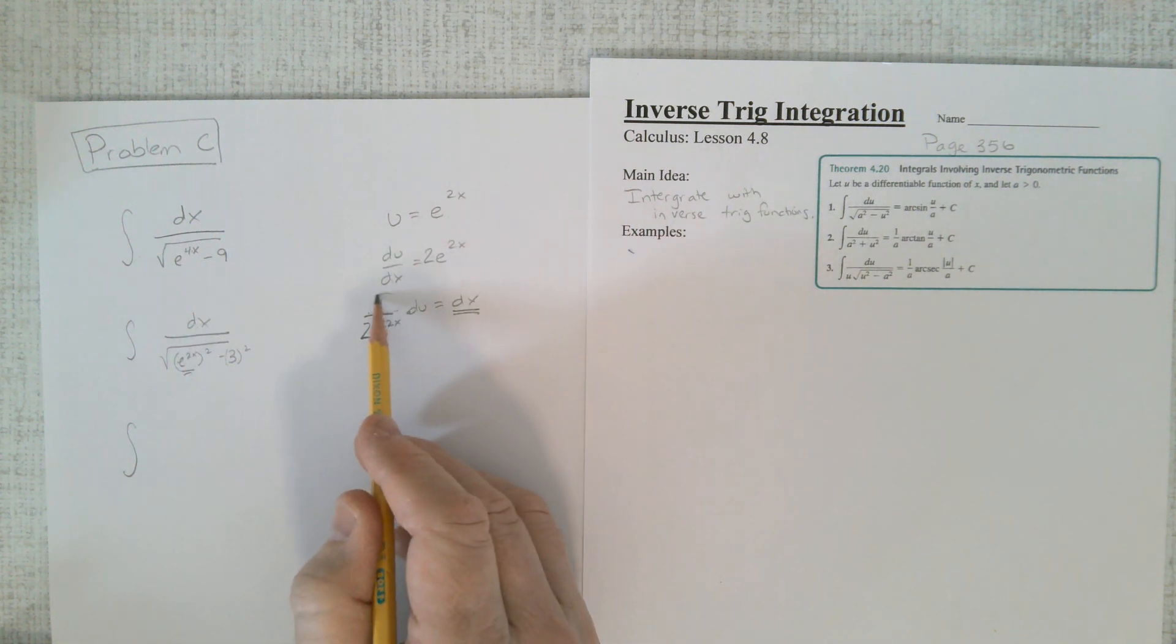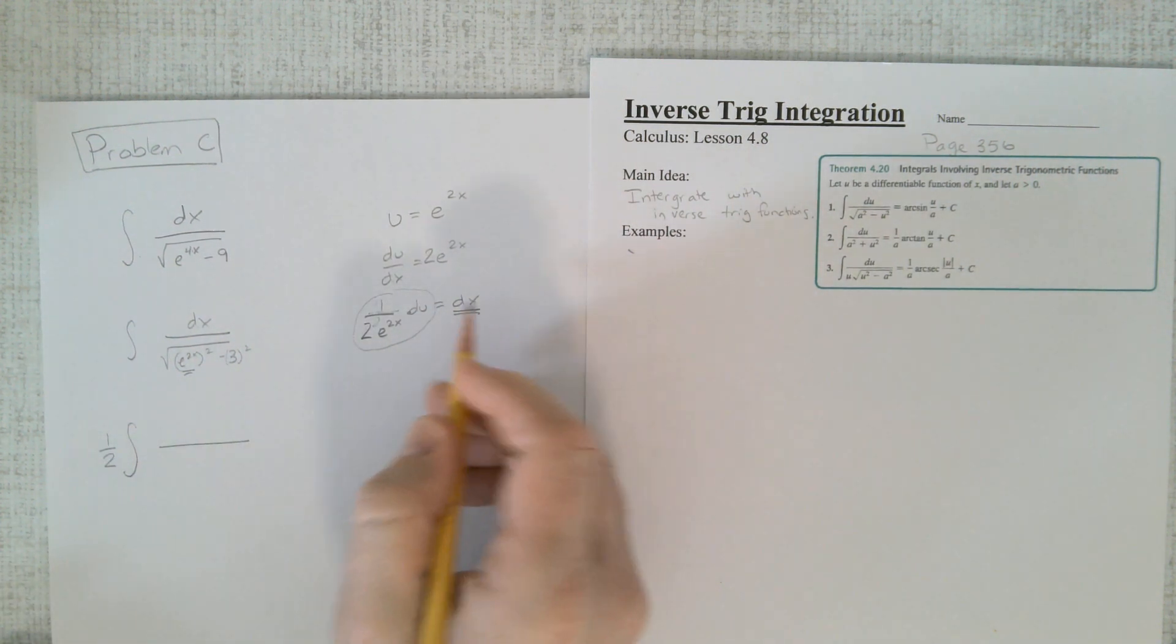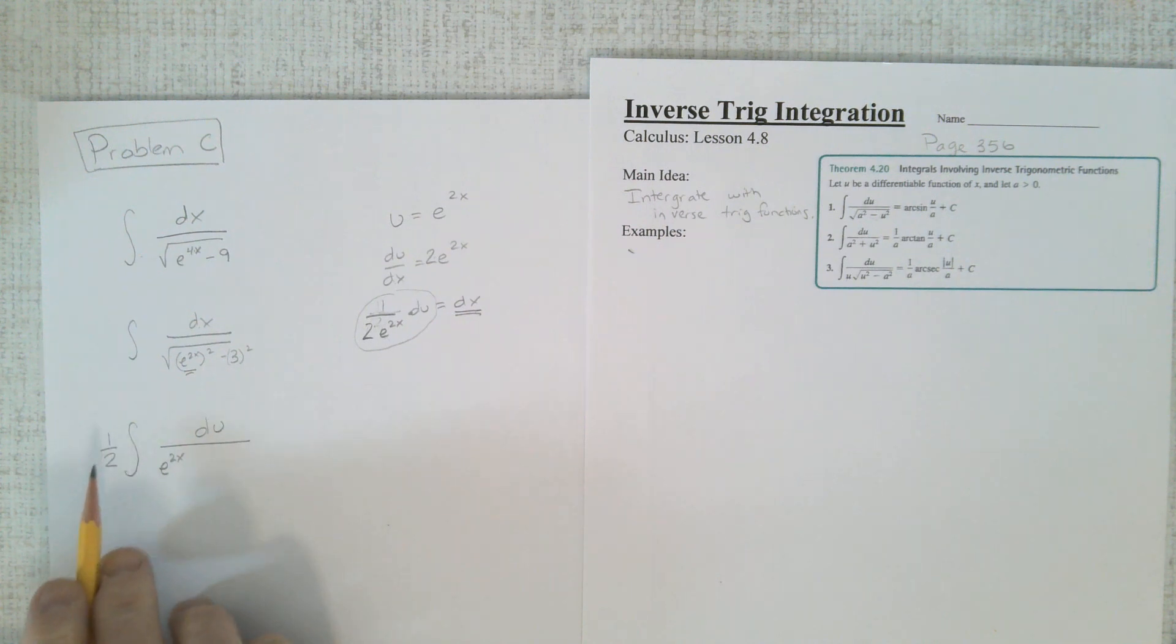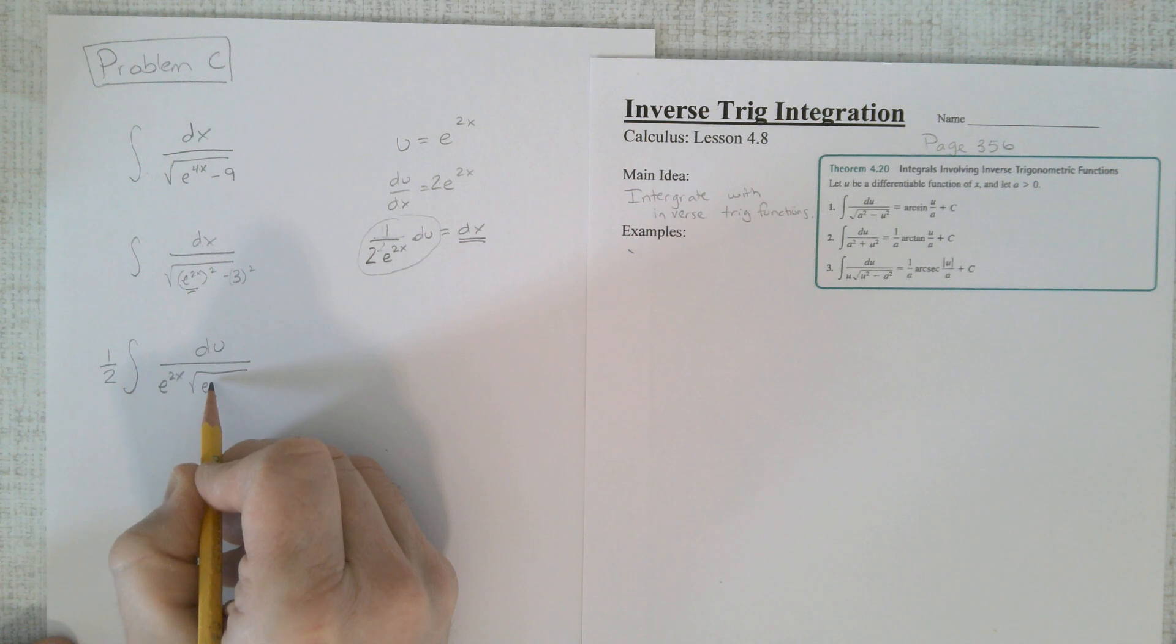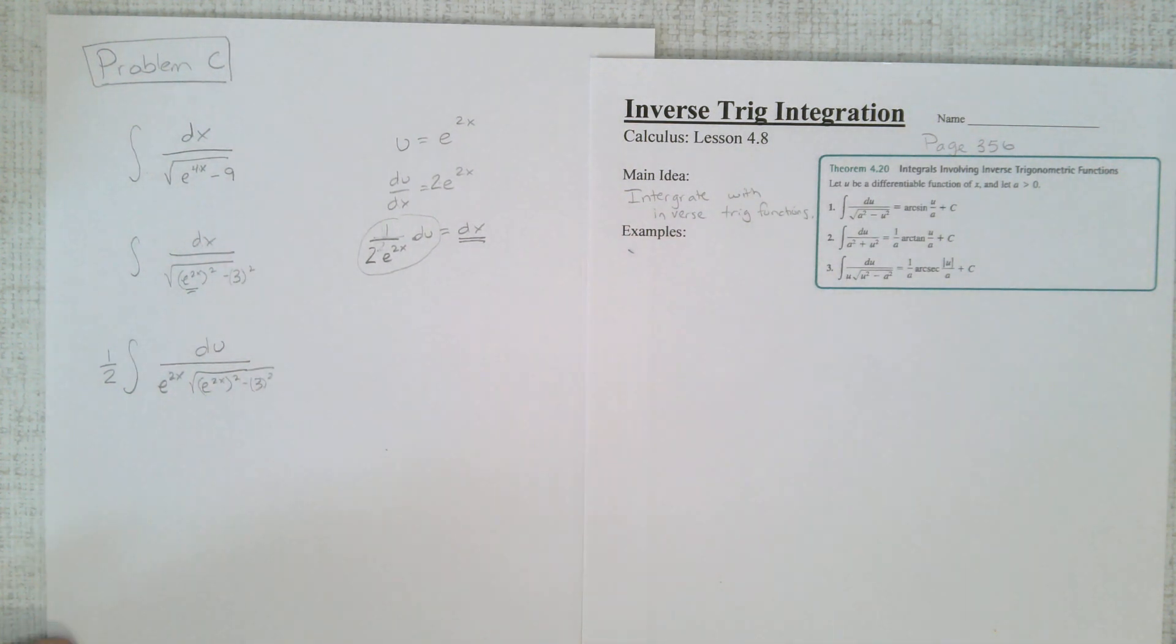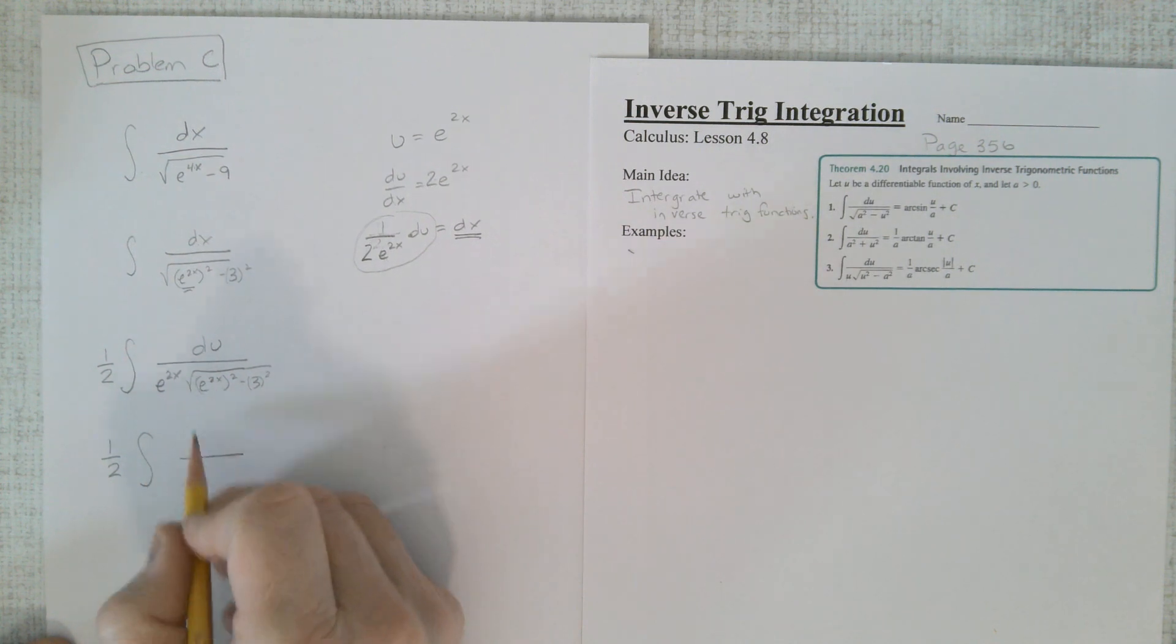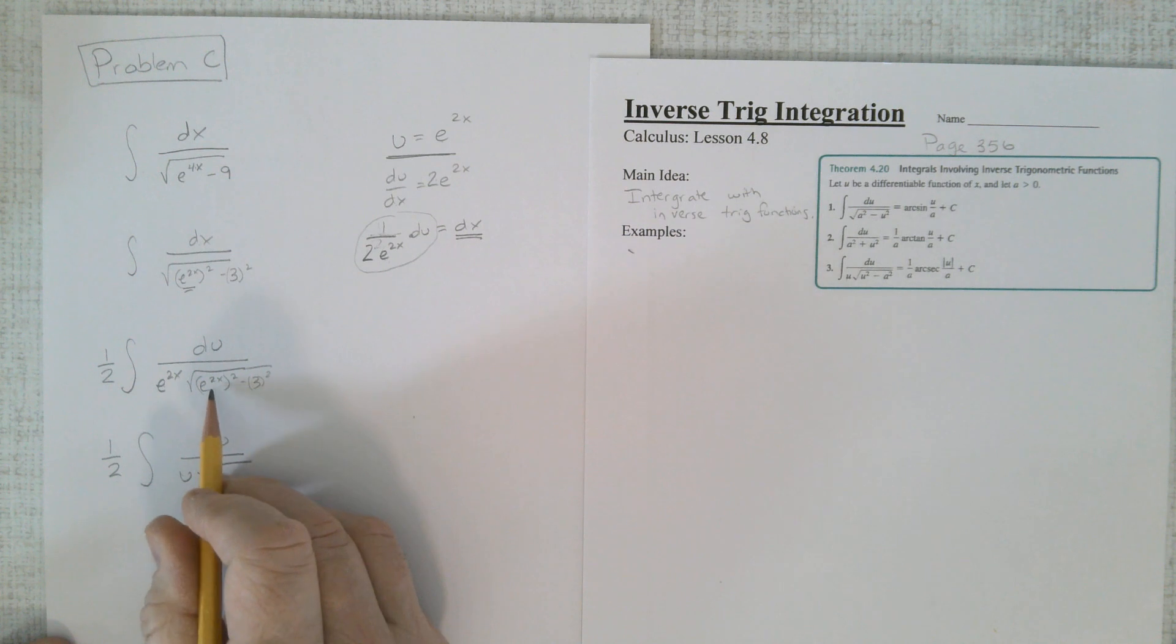Now, watch the substitution here. It's kind of neat. This is dx. That's dx. So all of this has to go over there. I can put the 1 half out in front. And I can put the du there. And then this is in the denominator. So I'm going to put it right there. I'm not going to put it outside. I'm going to leave it inside. And then what do we have? Well, I'm not going to change this yet. But look what that does. Now I have a variable out there.